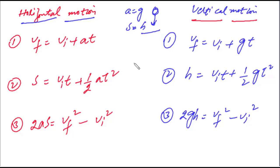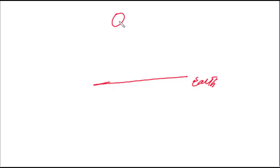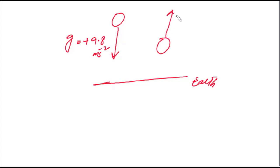اب g کو تھوڑا اور explain کر لیتے ہیں۔ فرض کریں یہ earth ہے اور یہ earth کی surface ہے۔ اگر کوئی object earth کی طرف آ رہا ہو تو اس کے لئے g کا sign positive ہوگا یعنی +9.8 m/s²۔ اور اگر کوئی object earth سے دور جا رہا ہو تو اس کے لئے g کی value ہوگی −9.8 m/s²۔